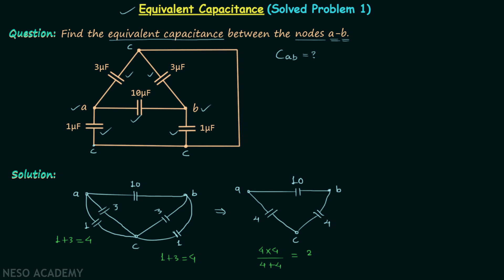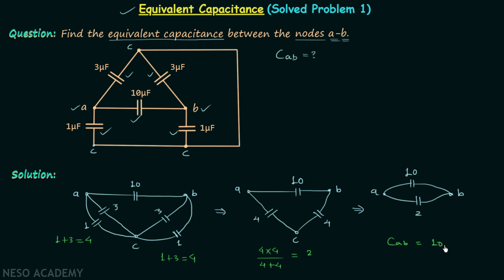In the next step we have two capacitors connected in parallel between node A and node B. The first capacitor has the value 10µF and the second capacitor has the value 2µF. In parallel connection the values are added, so our answer is 10µF plus 2µF which equals 12µF. So this is our answer.